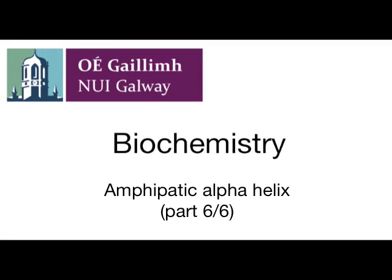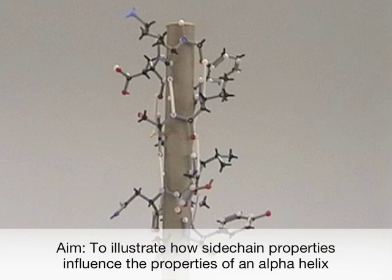Amphipathic alpha helix. This is part 6 of a 6-part series. The aim of this segment is to illustrate how side chain properties influence the properties of an alpha helix.